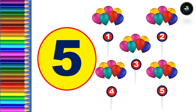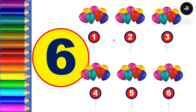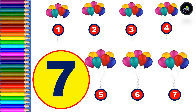Next, five: one, two, three, four, and five — total five bunches of balloons. Next, six: one, two, three, four, five, and six — total six bunches of balloons. Next, seven: one, two, three, four, five, six, and seven — total seven bunches of balloons.